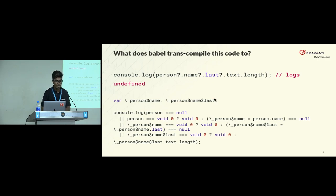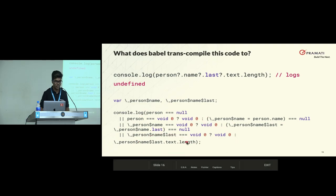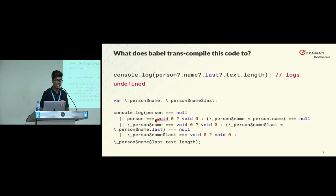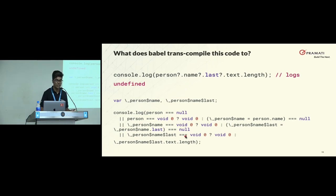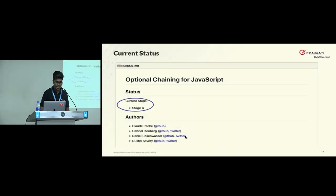How does the code compile with Babel? If I run the Babel CLI command, this is how it transpiles: it will check if person is null or if person is undefined — and there's an interesting blog post about why void zero is used instead of checking with person equal to undefined or typeof person equal to string of undefined. It checks each property, storing person dot name in a variable and then checking for last. Whatever I was doing in my manual hack, Babel is doing the same thing in a different way. This is in stage four on TC39 proposals.